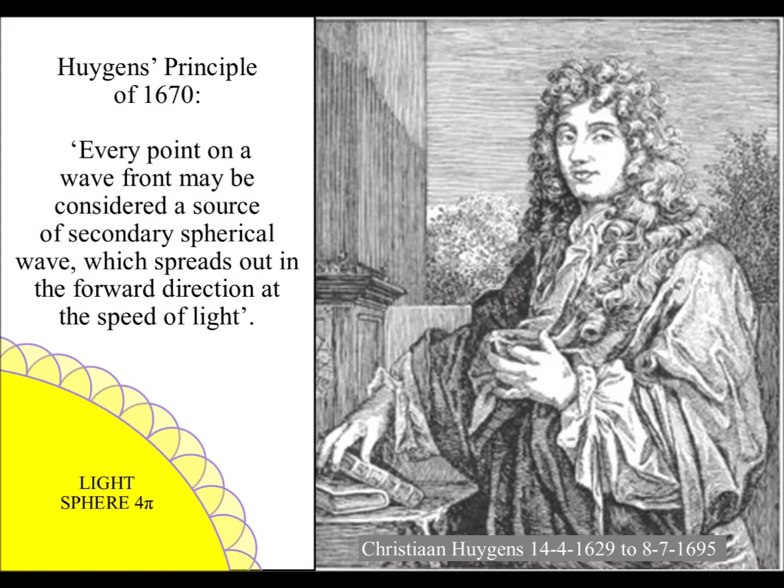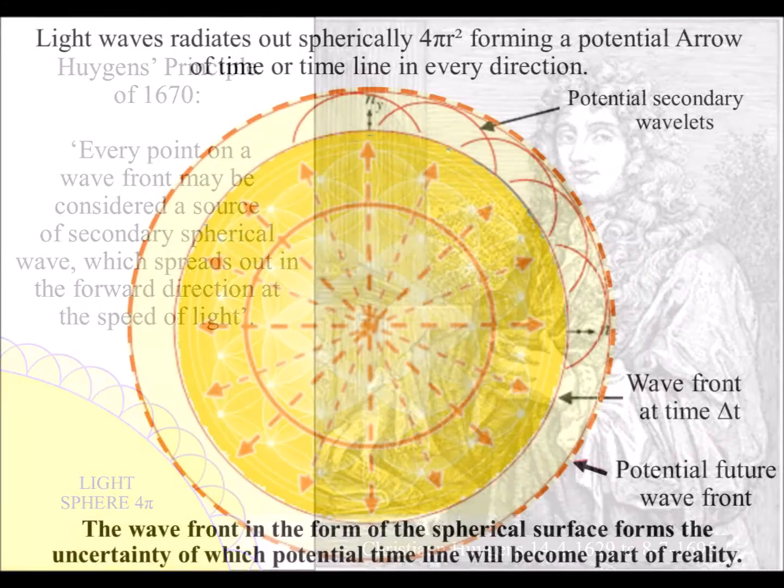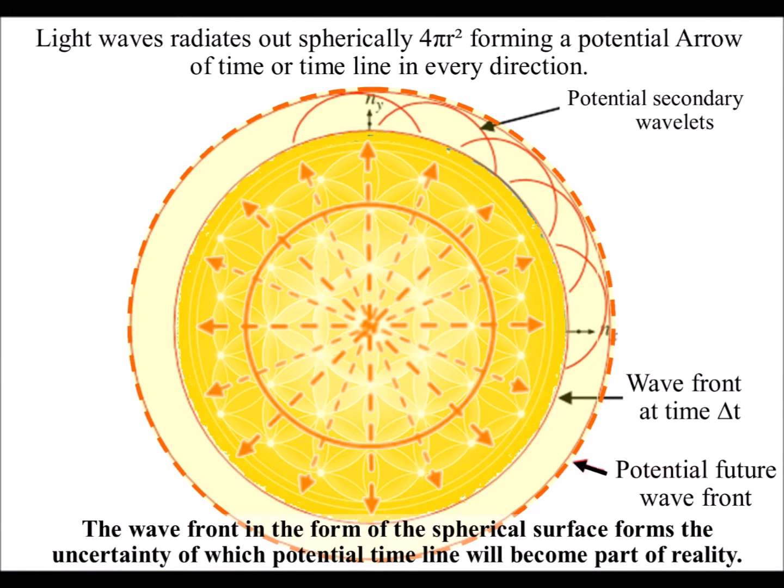This is possible based on Huygens' Principle of 1670 that explains light as a spherical wave and says every point on a light wavefront has the potential for a new spherical light wave.